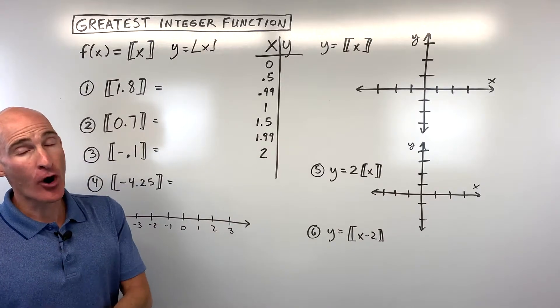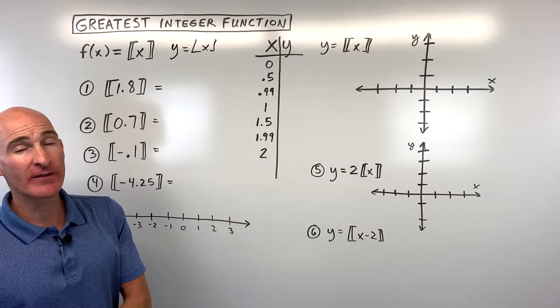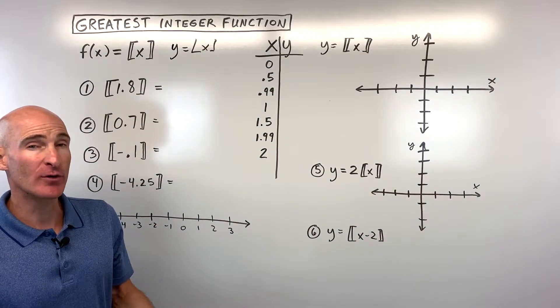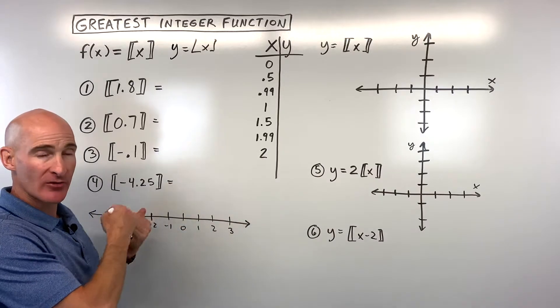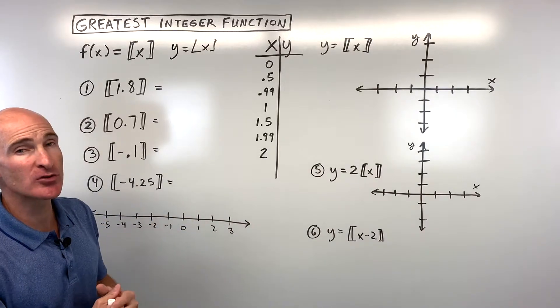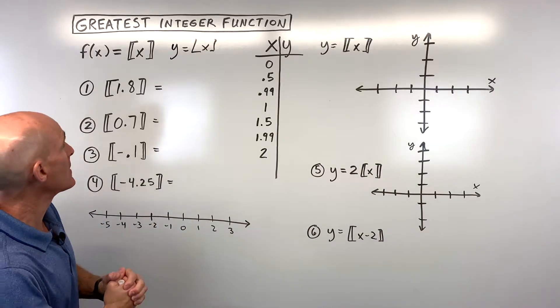Now, if you're already on an integer value, you stay on that integer value. But if you're in between integers, you want to round to the left on the number line. So let's go through some examples.